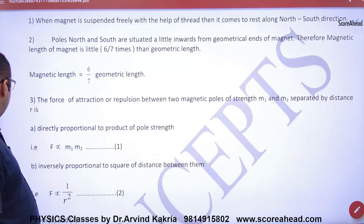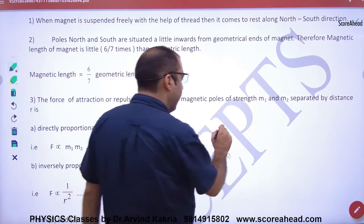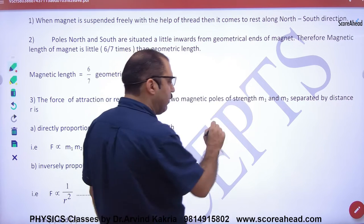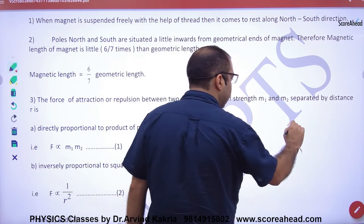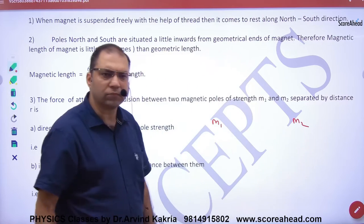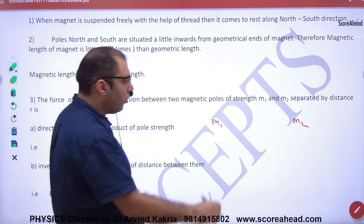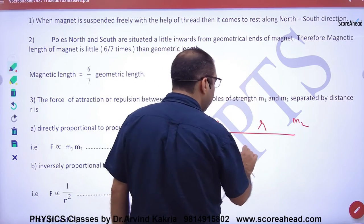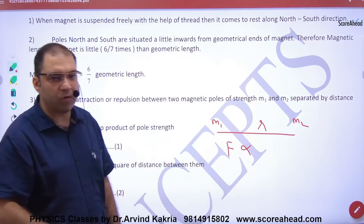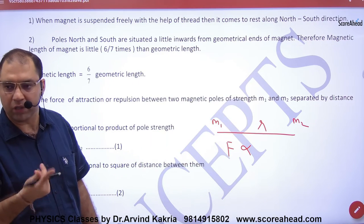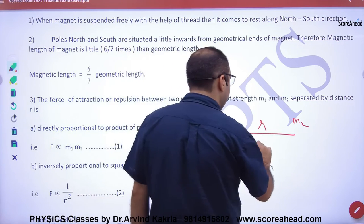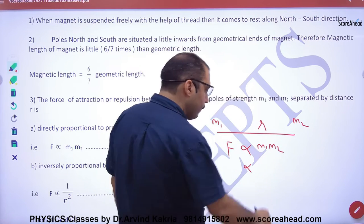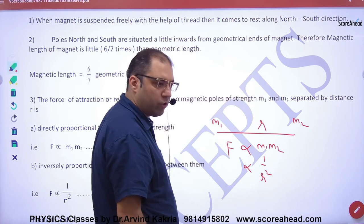Next hai, agar maanlo aapke paas do poles hai, alag-alag magnet ke ho sakti hai. Ek magnet ke toh ek M or M hota hai, M1 M2 kabhi nahi hota. For a particular bar magnet, toh ek M1 pole hai, ek M2 pole hai, hoga alag-alag magnet ka. And they are separated by a distance of R. Toh inke beech mein force of attraction bhi ho sakti hai, repulsion bhi ho sakti hai, depending north, south, south, north, yaha hai. Toh jo bhi inke beech mein force hogi, woh M1 into M2 ke directly proportional hogi, and inversely proportional to R square hogi.